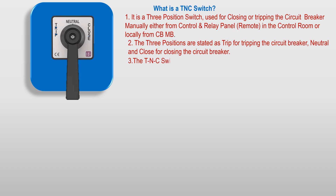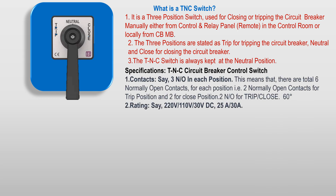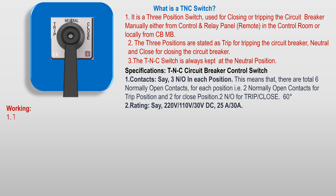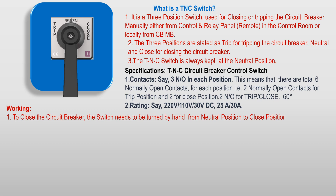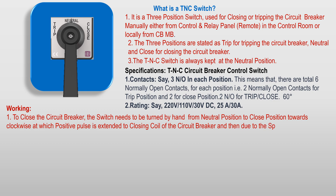The TNC switch is always kept at the neutral position. To close the circuit breaker, the switch needs to be turned by hand from neutral position to closed position in the clockwise direction, at which a positive pulse is sent to the closing coil of the circuit breaker. Then, due to spring action, the switch automatically comes back to the neutral position when the hand is taken off.